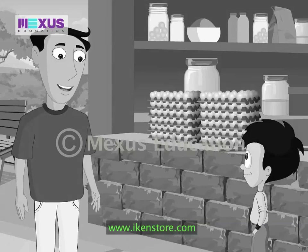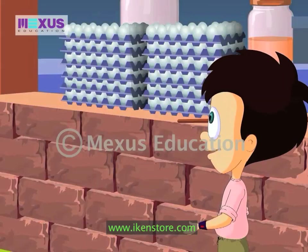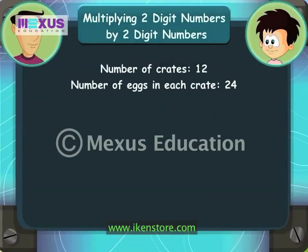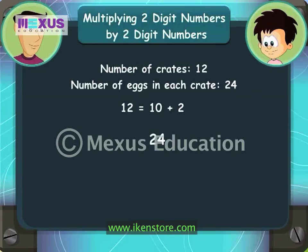Just multiply 24 by 12 and you get the total number of eggs. But I get so confused while multiplying two-digit numbers. It's easy, JC — look here. Before we multiply 24 by 12, let's break 12 into units and tens. 12 can be written as 10 plus 2. First, let's multiply 24 by 2.